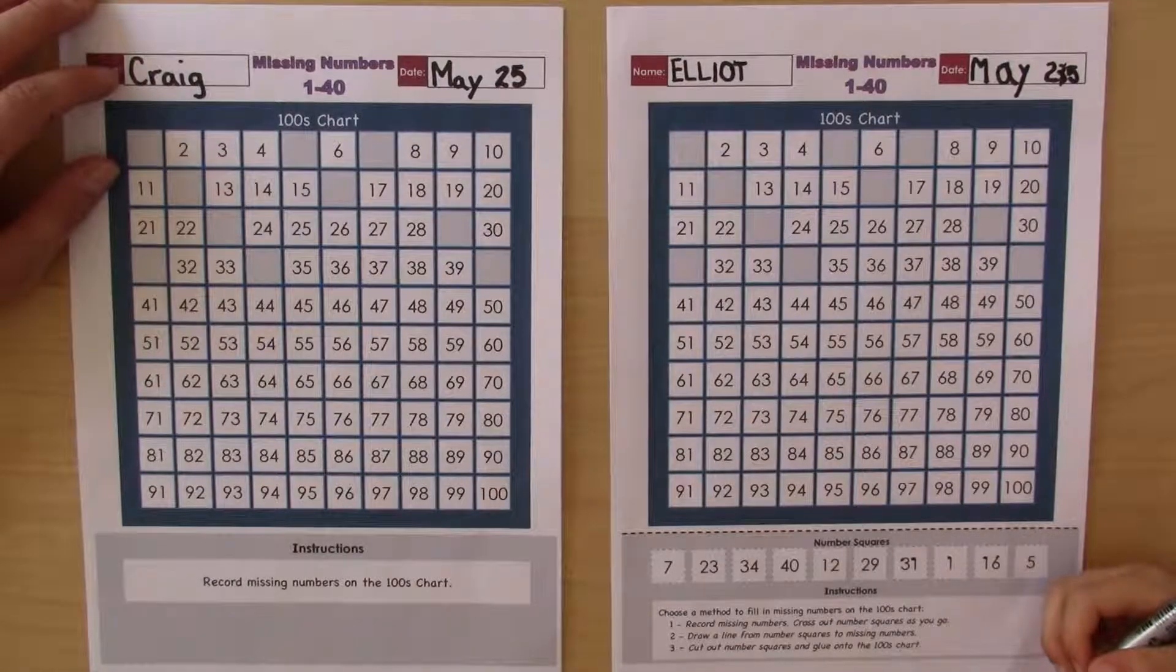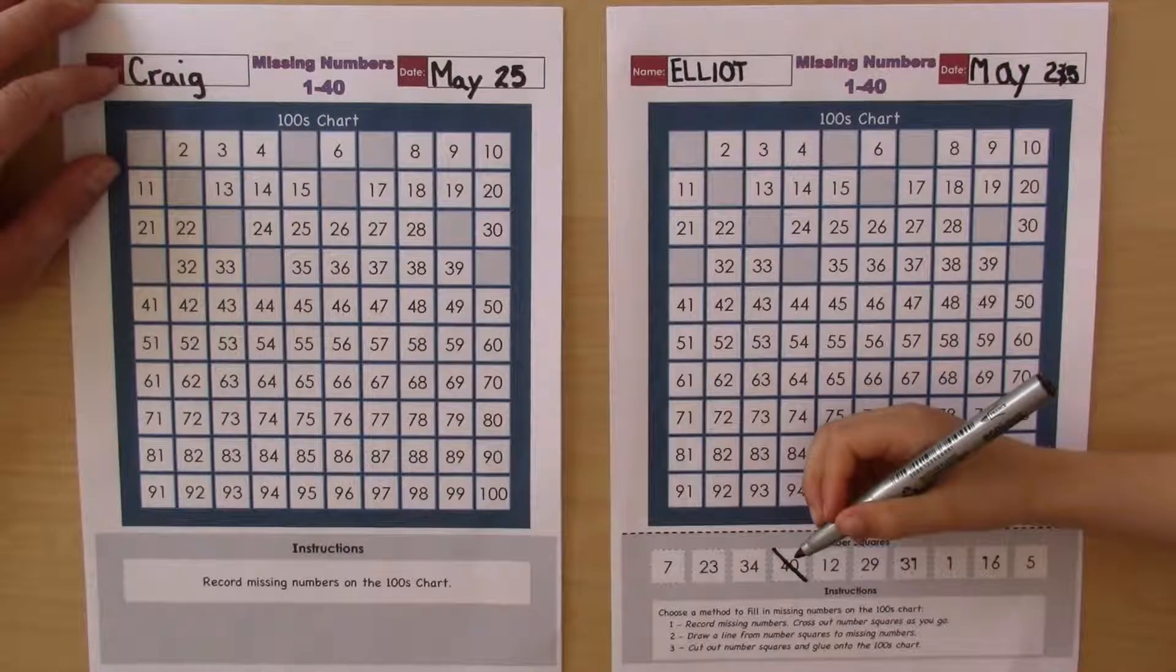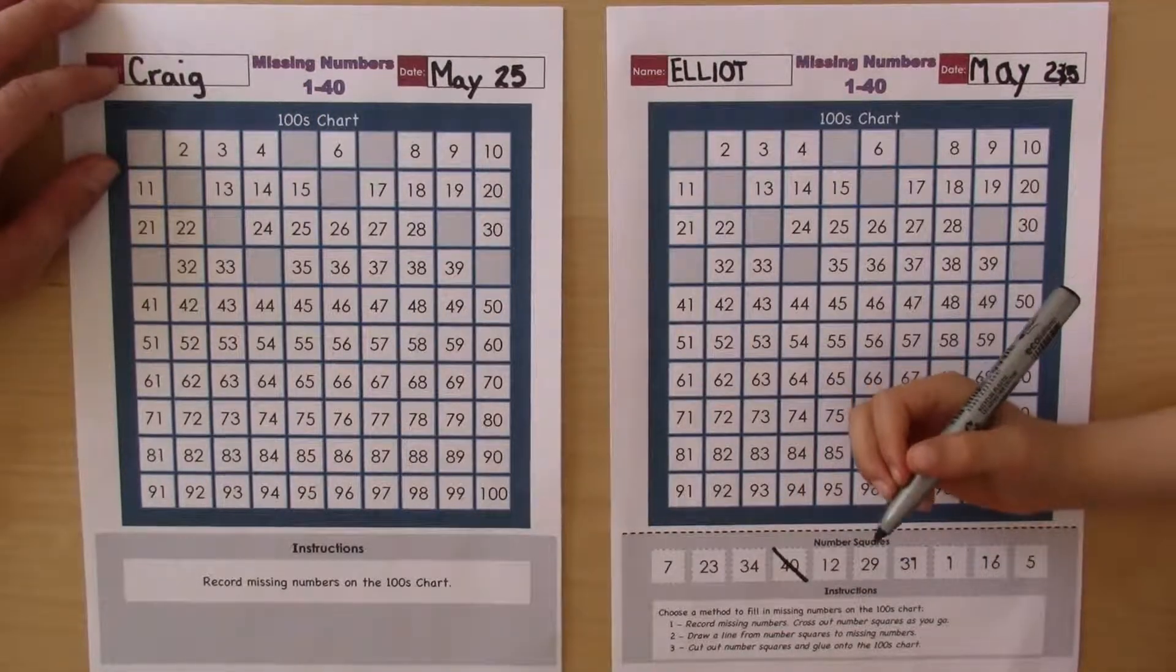Okay, Elliot. Which number would you like to start with? This one. What's that called again? Forty. And how do we say forty in French? Quatre.